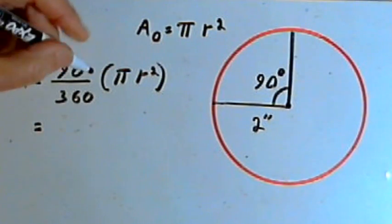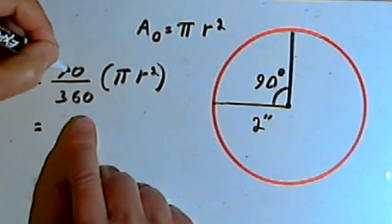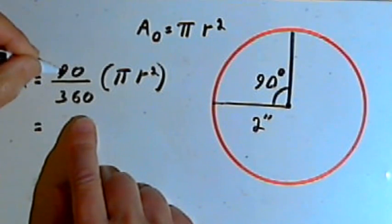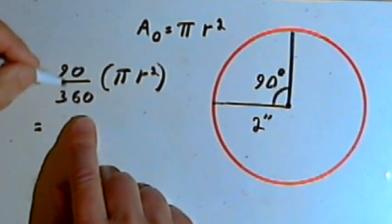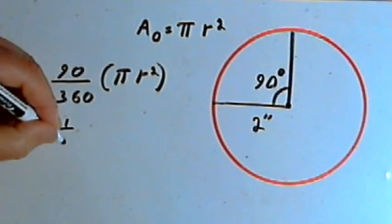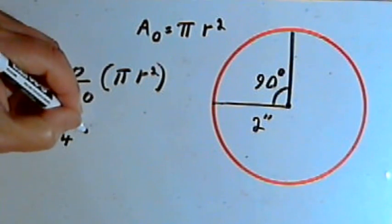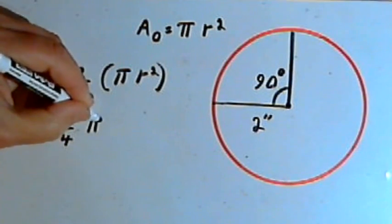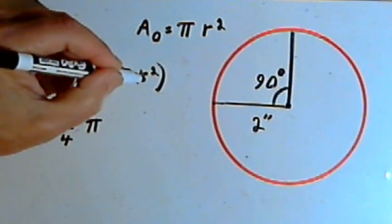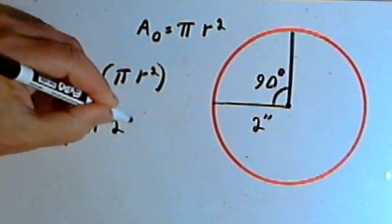So I can take this, I'm going to simplify the 90 over 360. I'll divide 90 into both the numerator and the denominator of that fraction. That will give me 1 over 4. And then I'm going to multiply that times pi times the radius squared, or 2 squared.